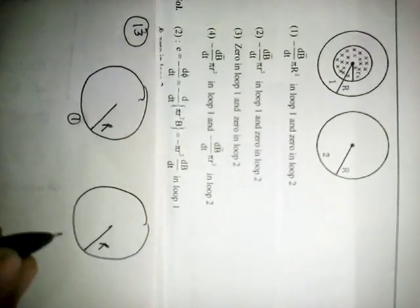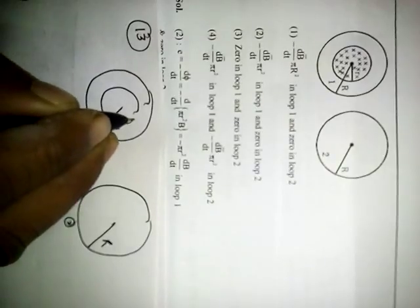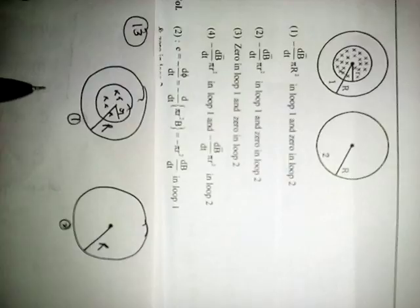In loop 1, magnetic field is restricted till radius R which is given, but in loop 2 is out of the magnetic field. So we have to find out the induced EMF in both coil 1 and 2.